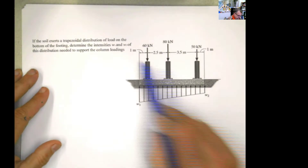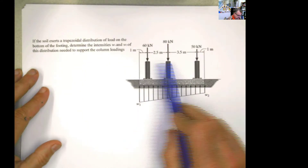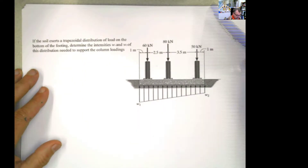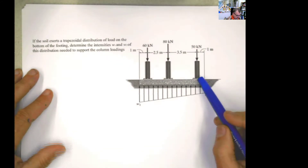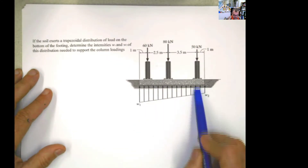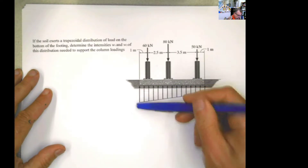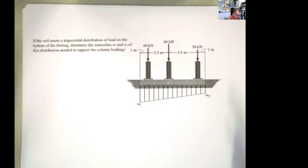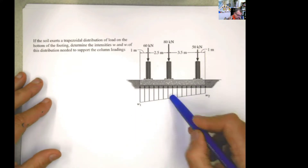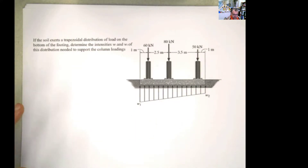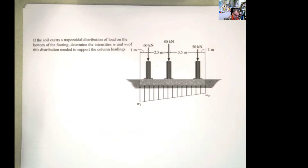In this part, you have several columns applied there with the loads coming from the upper stories. This is the soil pressure distribution. In this problem, you don't know the value of w2 or w1. For equilibrium, the summation of moments must be 0, and the summation of forces must be 0 — the resultant force and resultant moment both have to be 0.